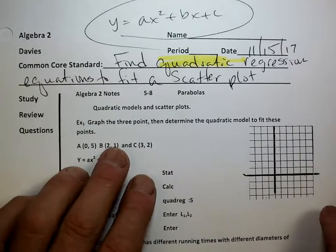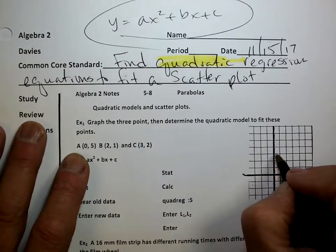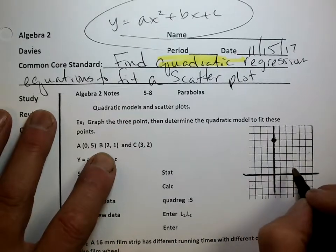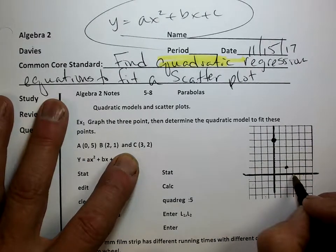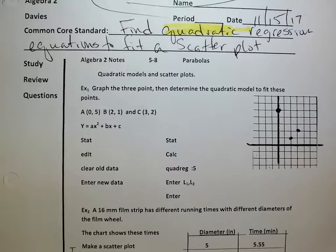Example one: Graph three points and then determine the quadratic model to fit these points. The points are (0, 5), (2, 1), and (3, 2). If I graph those three points, there could be some parabola that maybe goes through all three of them. I could draw it in and it could touch all three. What I want to do though is find the equation of that line.